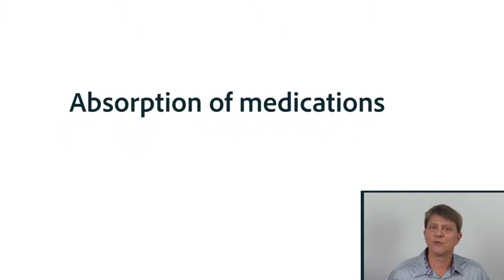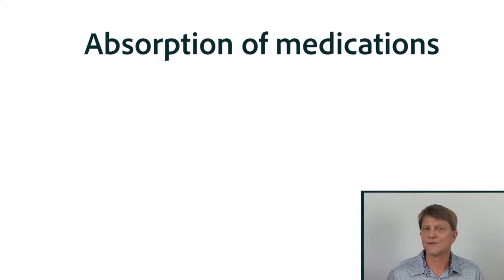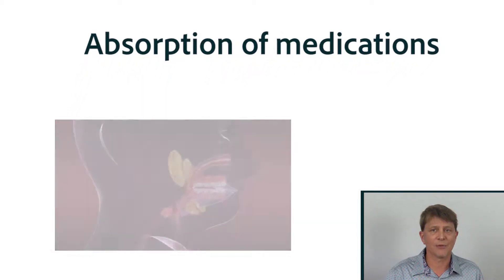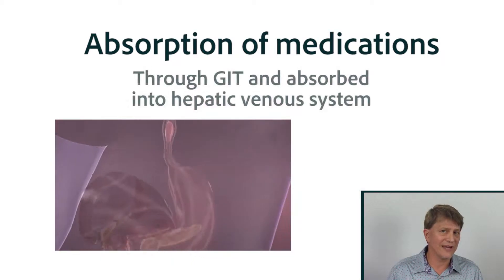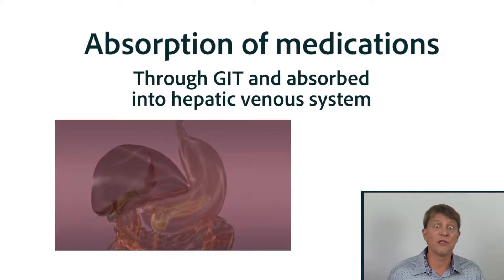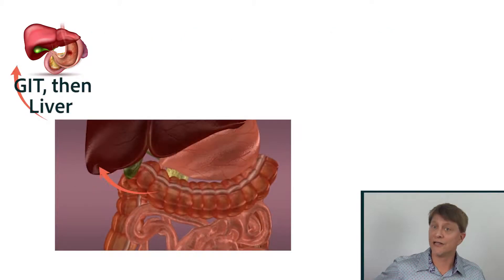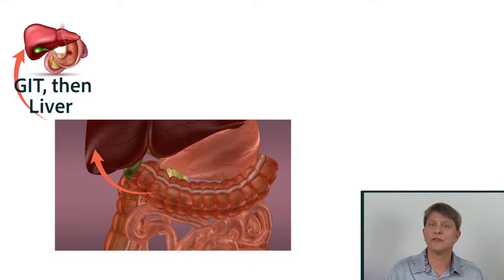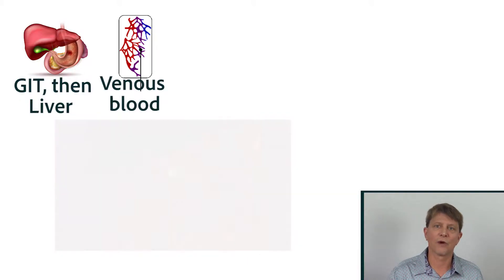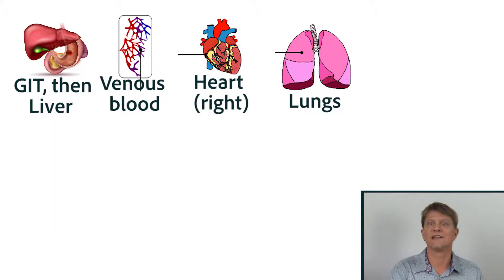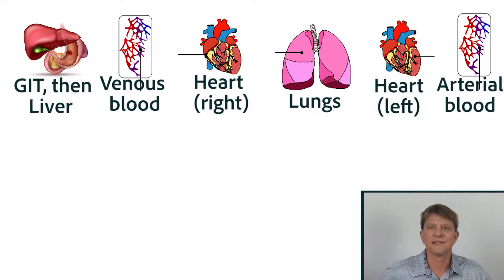There are many ways in which we can administer medications. For instance, if we took an oral tablet, that tablet is going to go down into the stomach, break up into millions of little pieces, wind up going into the liver, into the venous system, into the right side of the heart, into the lungs, into the left side of the heart, and then finally onto systemic arterial circulation where it's going to be able to do its actions.